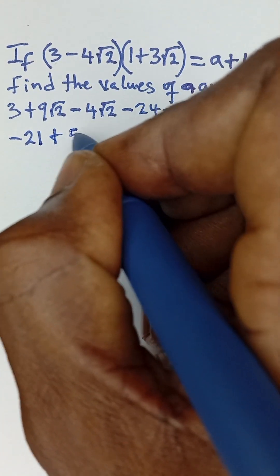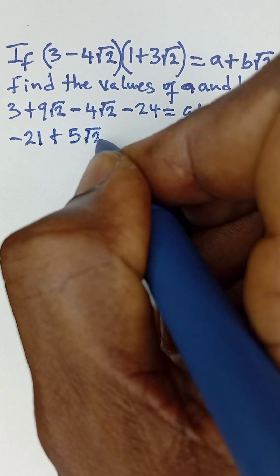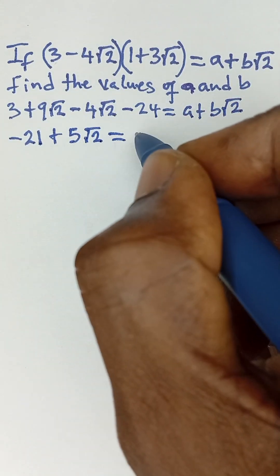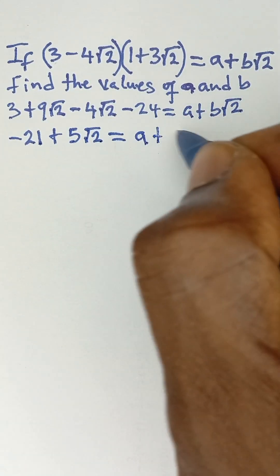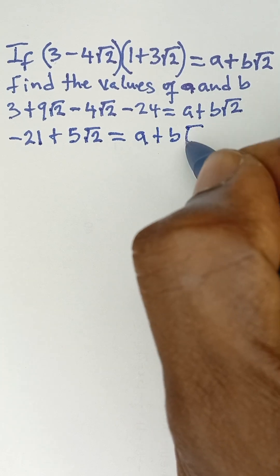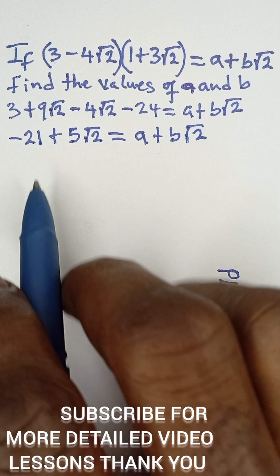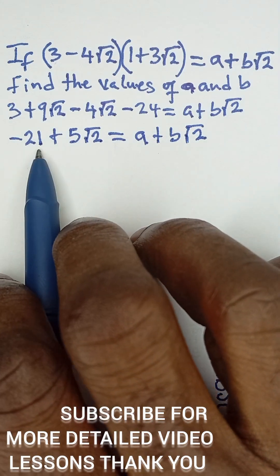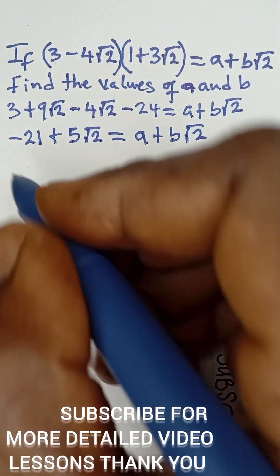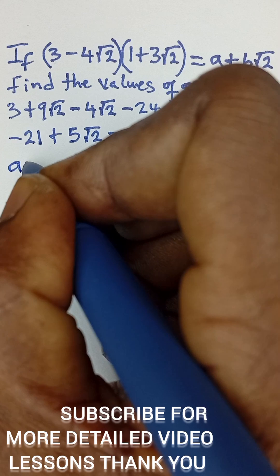If we compare the left-hand side and the right-hand side, you agree that the constant term -21 here is equal to a. So we can conclude now by comparing that a is equal to -21.